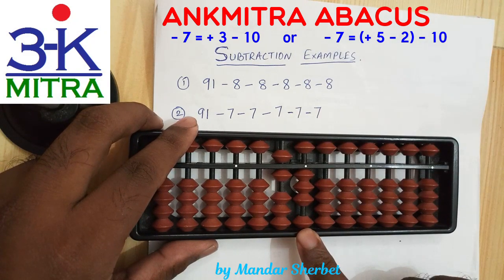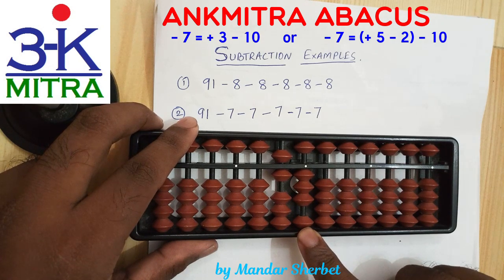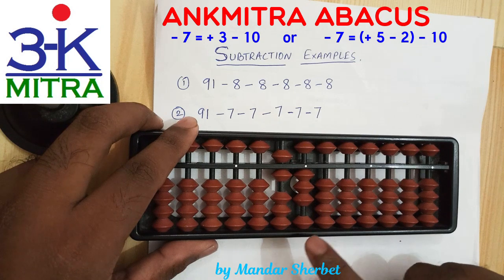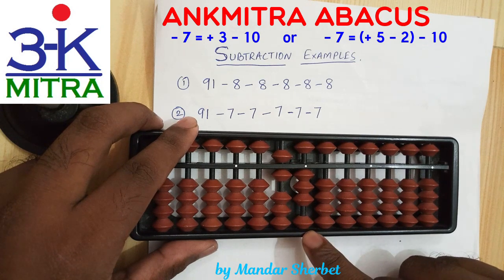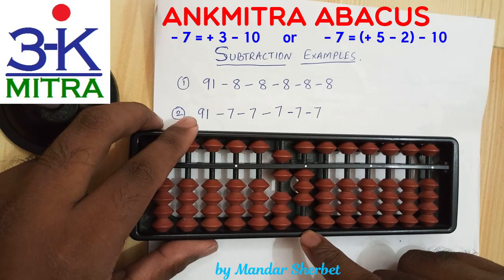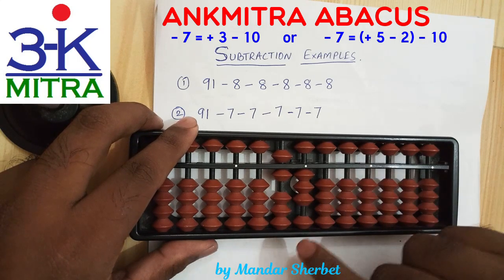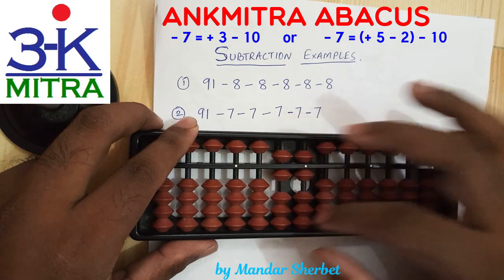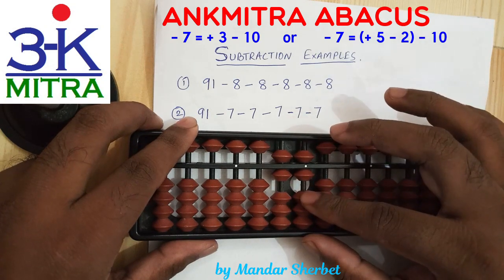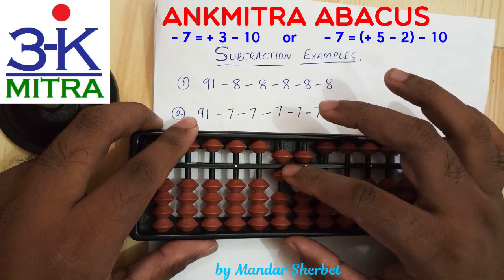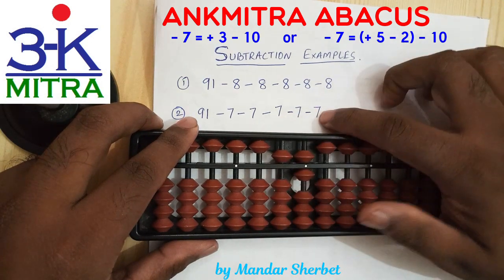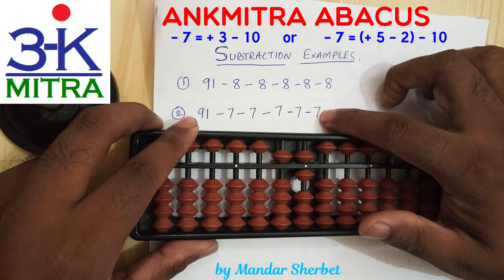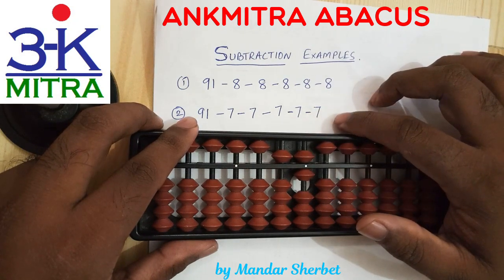Moving to the last subtraction of 7 — we don't have 7 beads available to subtract directly, so we need to do plus 3 minus 10. But plus 3 cannot be done since we don't have 3 beads available. So using the combination formula, we do plus 3 using its own small friend formula: plus 5 minus 2. Doing plus 5 minus 2 finishes the plus 3 part, and then along with that we do minus 10 on the next left rod to finish the subtraction of the final 7.